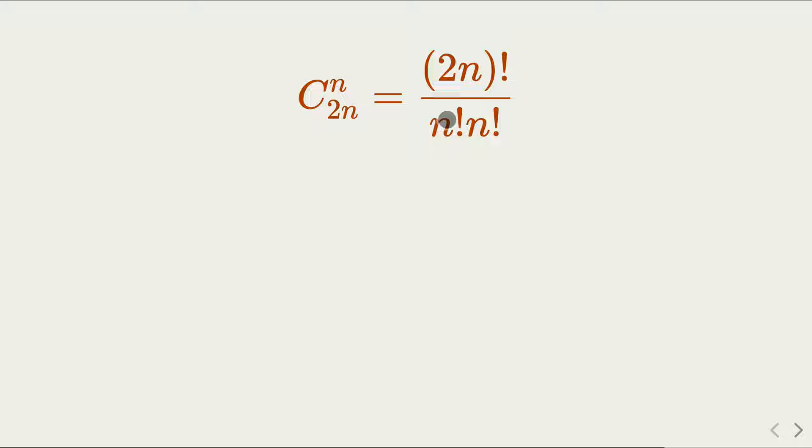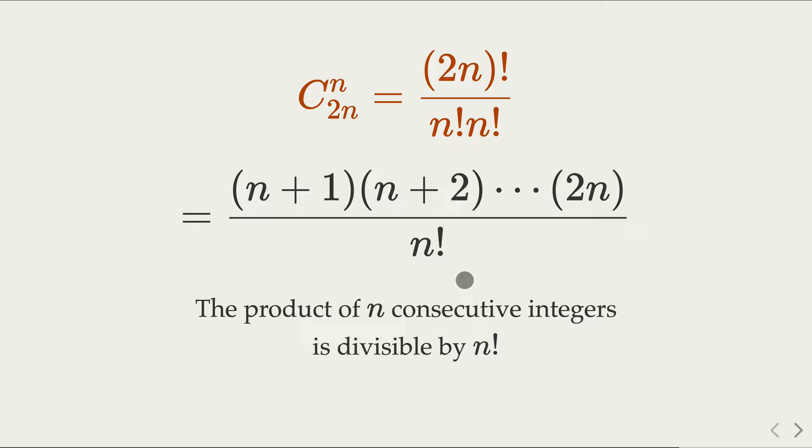Okay, this can be cancelled because n factorial would cancel 1 times 2 up to n, leaving the numerator starting from n plus 1, n plus 2, up to 2n. How many numbers? That's n numbers, and they are consecutive from n plus 1, n plus 2, up to 2n minus 1, and 2n. So, based on the earlier fact that the product of n consecutive integers is divisible by n factorial, the whole ratio here is an integer. So, we have proven that this is an integer based on an earlier fact in number theory.